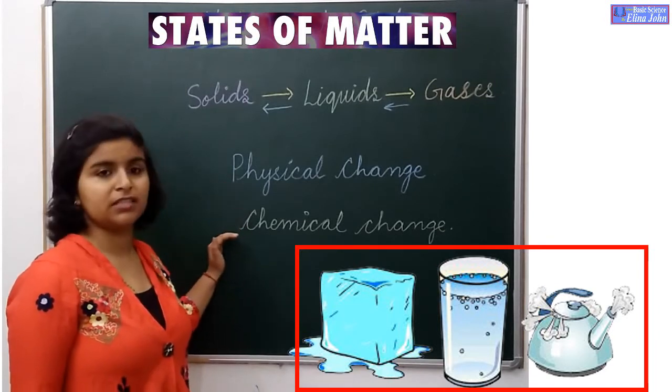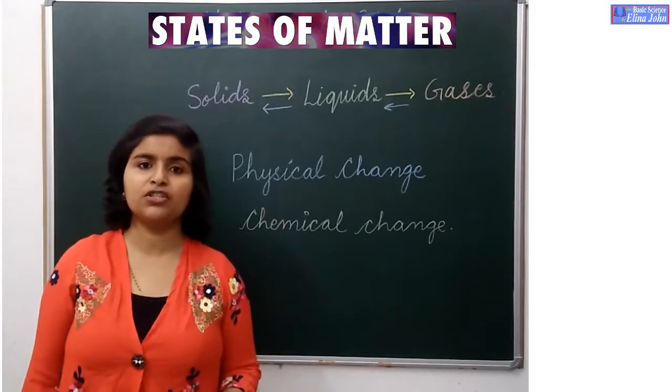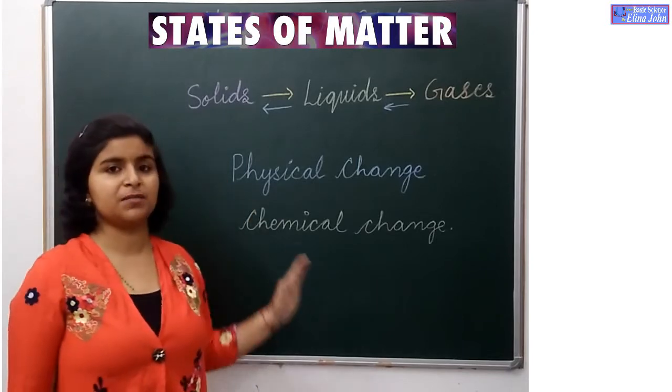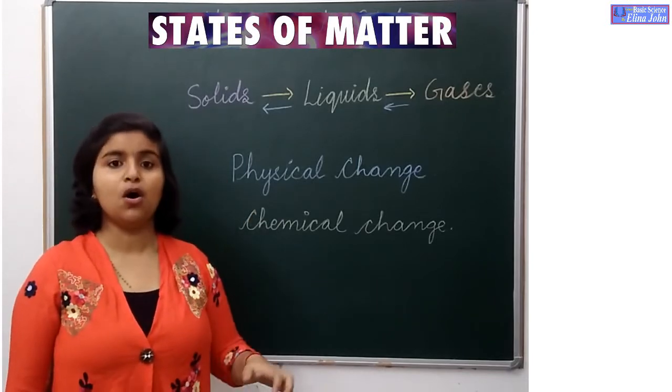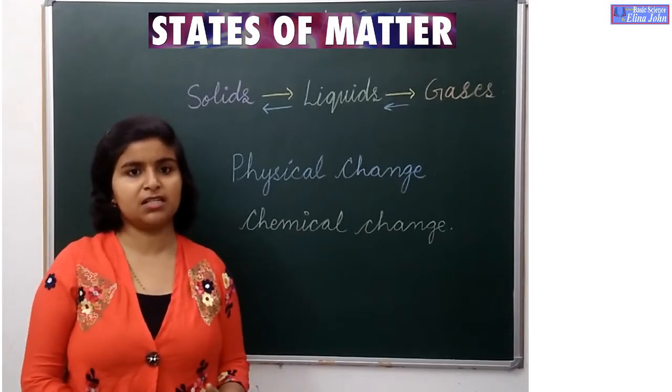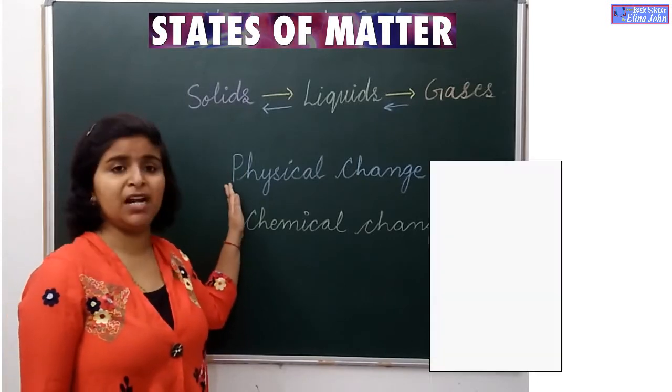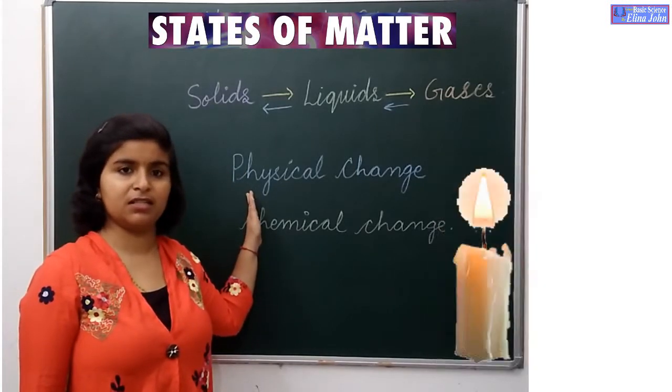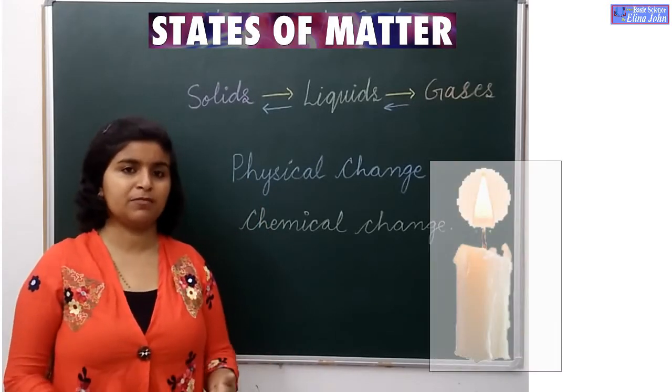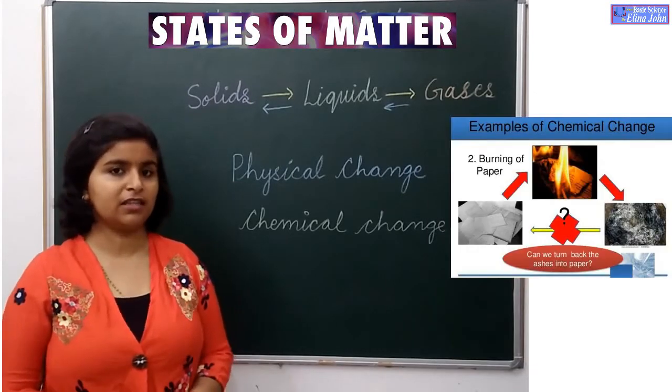Next we have physical change and chemical change. Physical change is the change in which no new substance is formed. The properties remain the same as the previous substance. The example is melting of wax. When we cool it down, the wax will be the same as before.